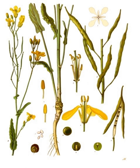Canola was originally a trademark, but is now a generic term in North America for edible varieties of rapeseed oil. In Canada, an official definition of canola is codified in Canadian law. A variety of rapeseed developed in 1998 is considered to be the most disease- and drought-resistant canola. This and other recent varieties have been produced using genetic engineering. In 2009, 90% of the rapeseed crops planted in Canada were genetically modified, herbicide-tolerant canola varieties.